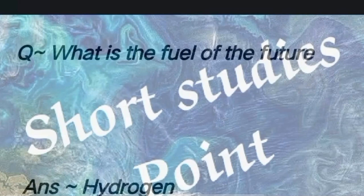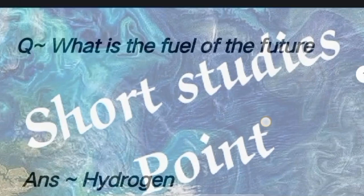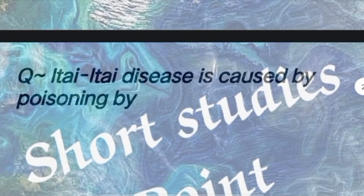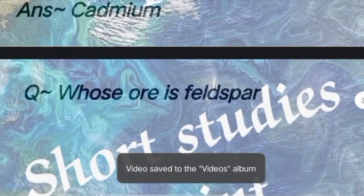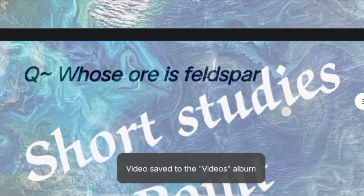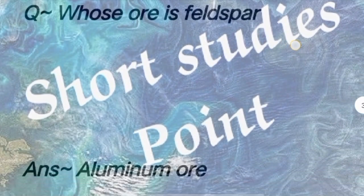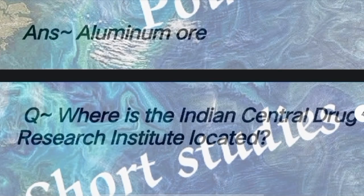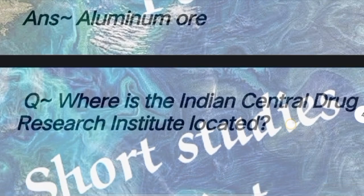Question: What is given to patients for instant energy? Answer: Glucose. Question: What is the fuel of the future? Answer: Hydrogen. Next question: Itai-itai disease is caused by poisoning of which element? Answer: Cadmium. Next question: Whose ore is bauxite? Answer: Aluminium.